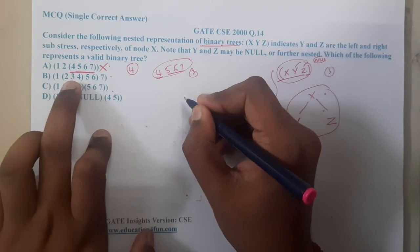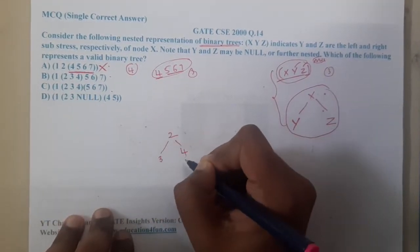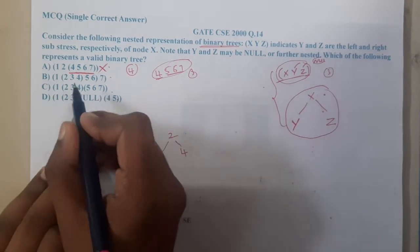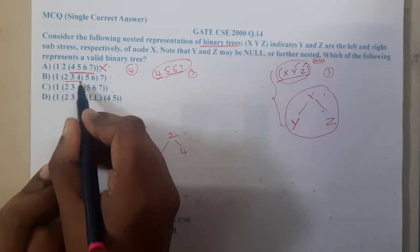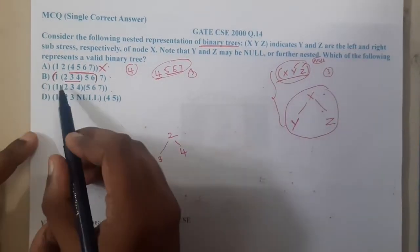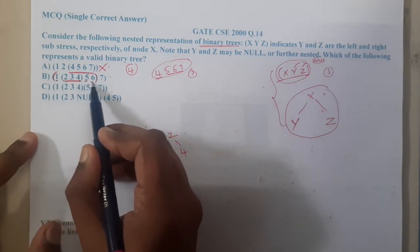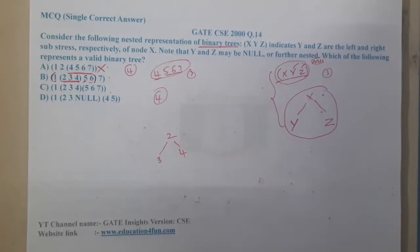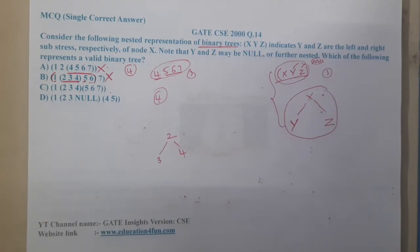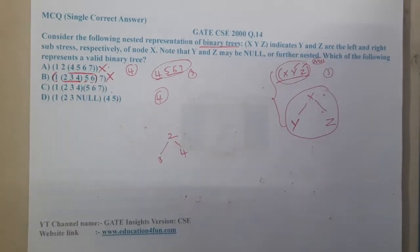Now let us look at option B. So first, two, three, four — two will be the parent and three and four will be the children, which sounds good. But after that, checking the outer bracket, it is indirectly having four parts: one part, the whole subtree, and two more parts. Again we are having four parameters, so this is also wrong.